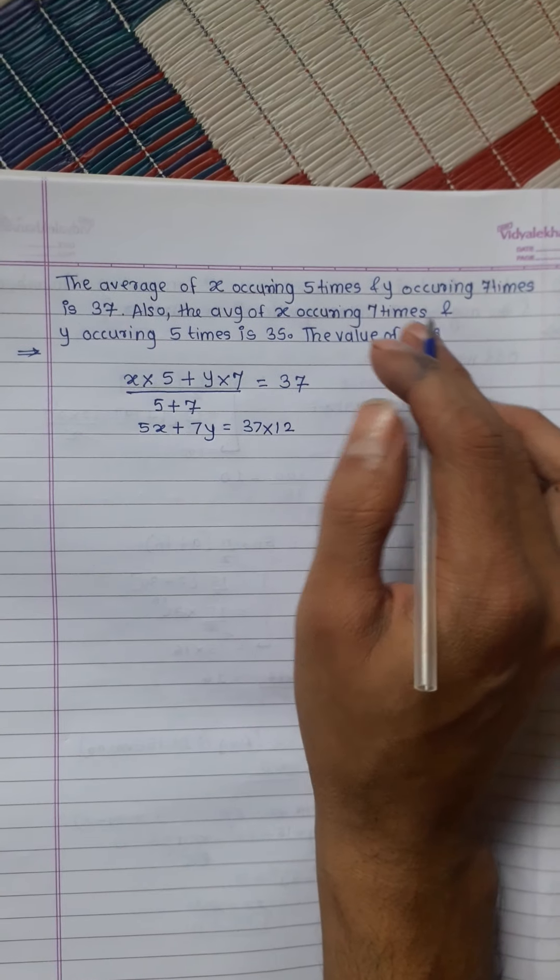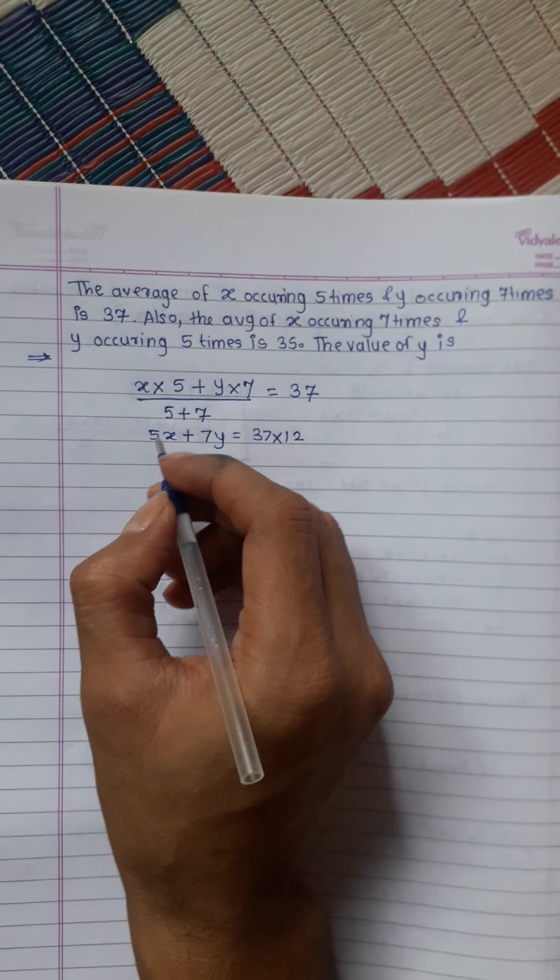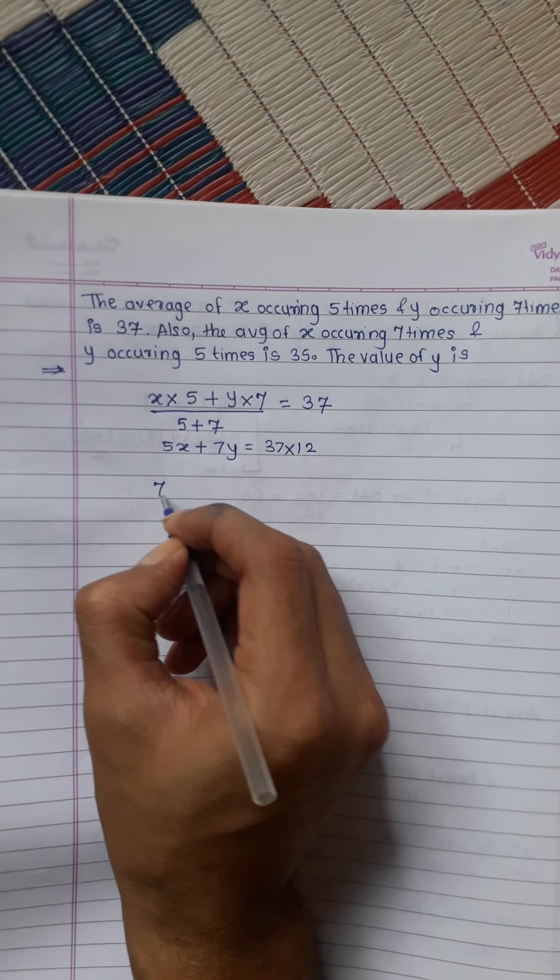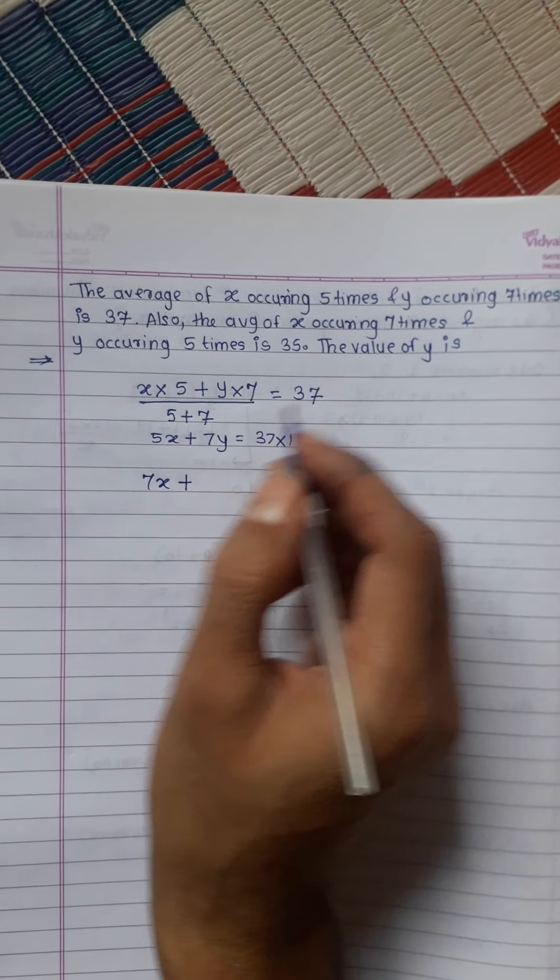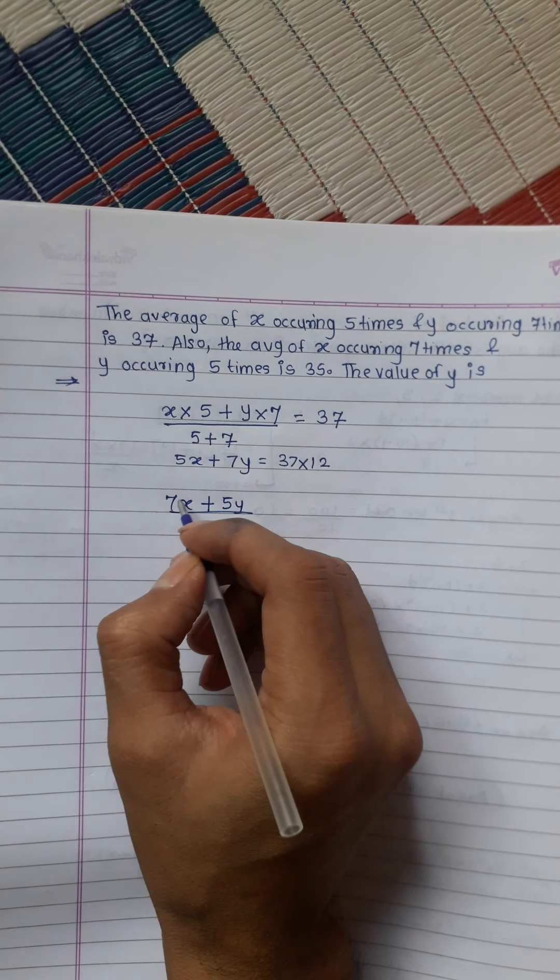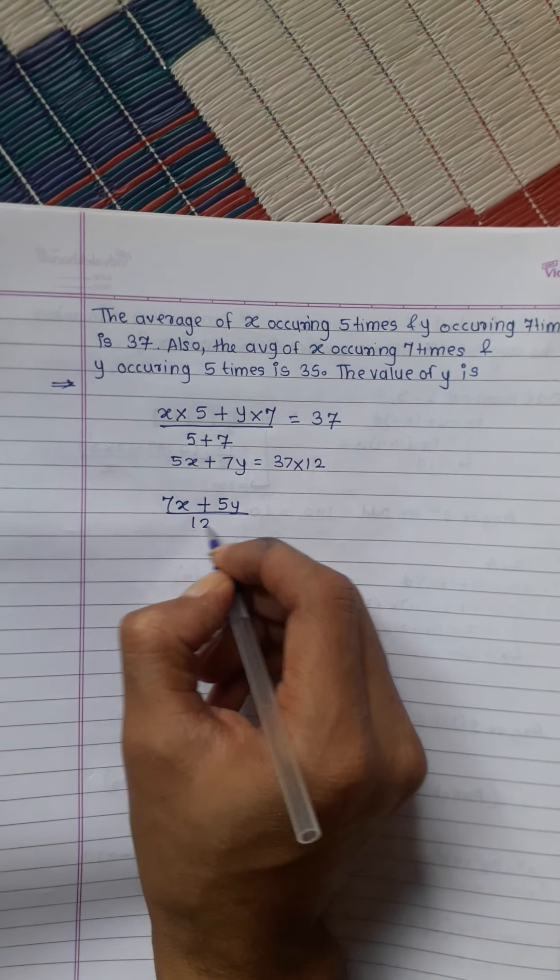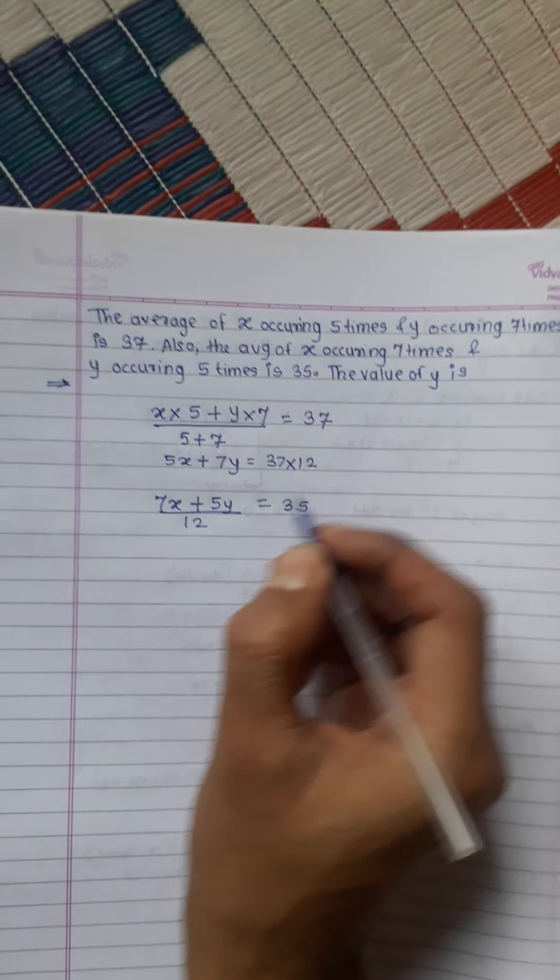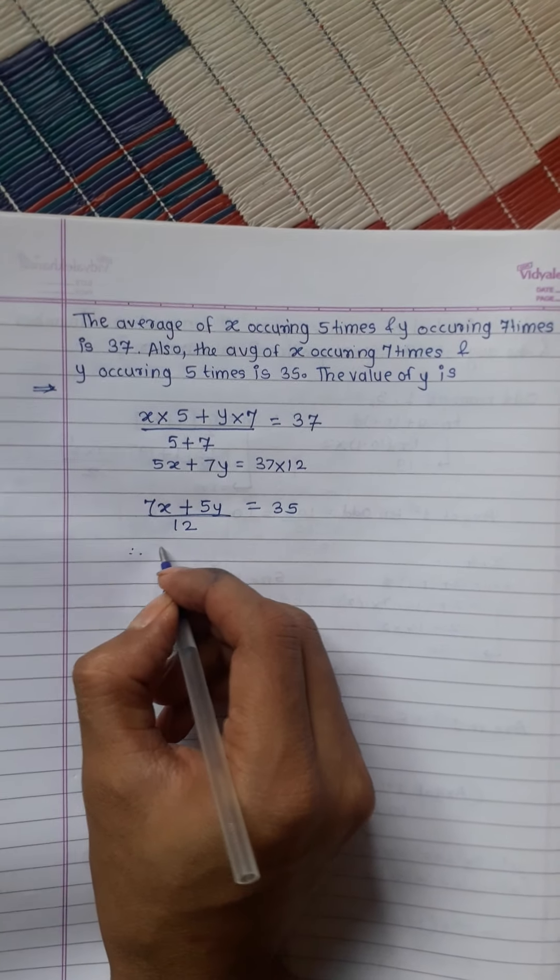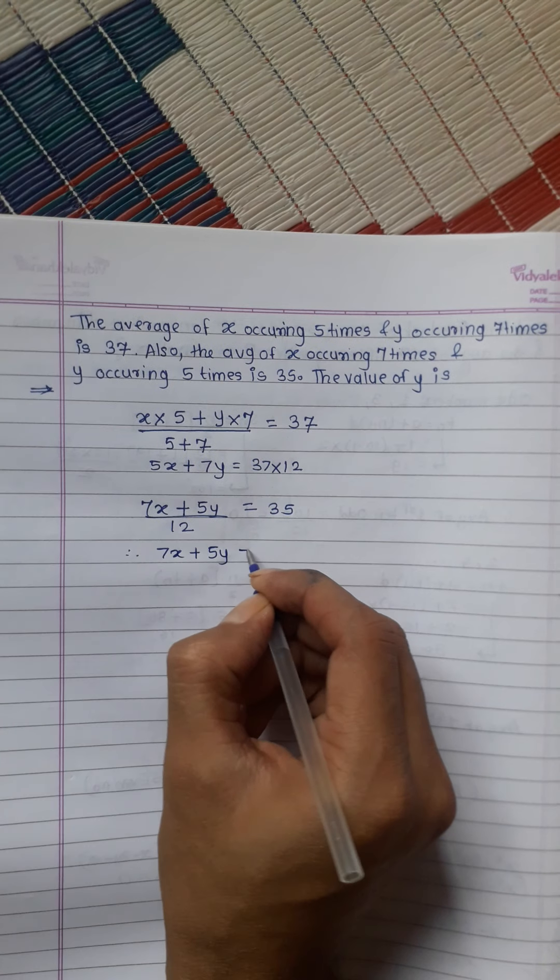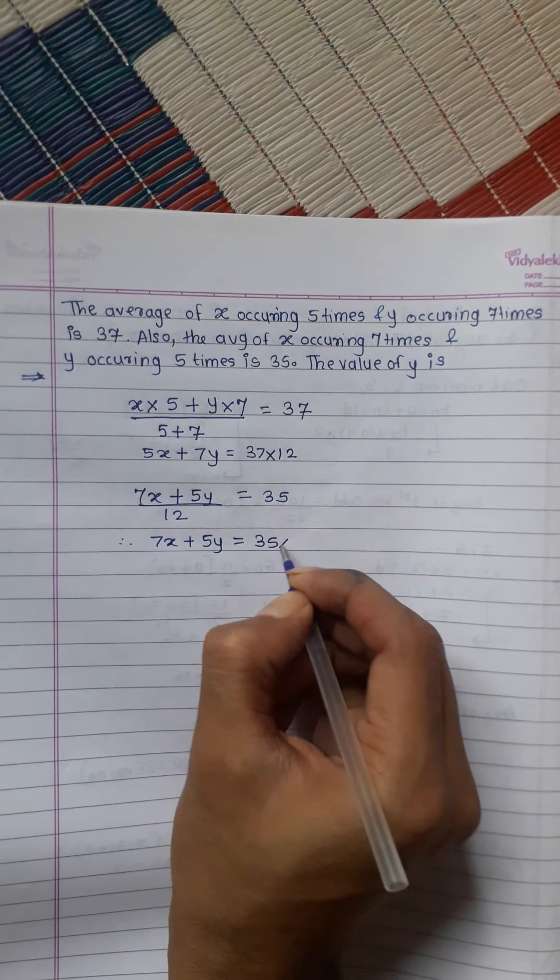In the second condition, the average of x occurring 7 times is 7x plus y occurring 5 times is 5y, divided by 7 plus 5, which is 12. This average is given as 35. Therefore, 7x plus 5y equals 35 multiplied by 12.